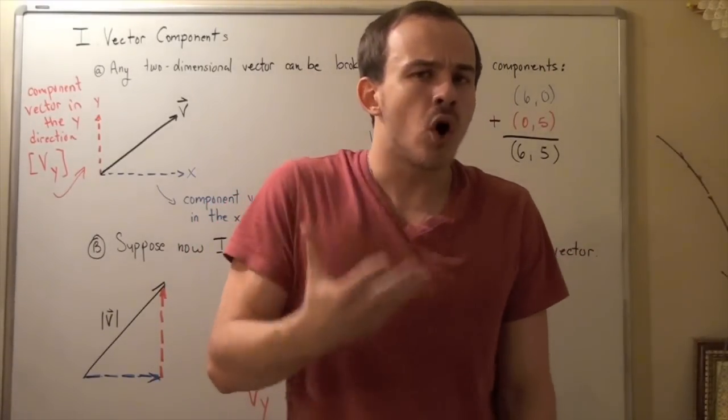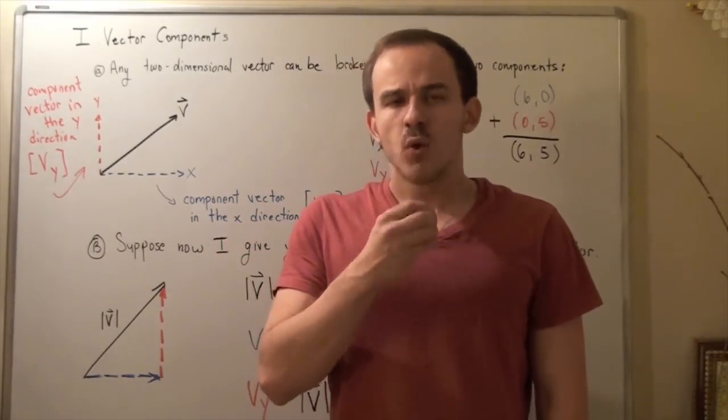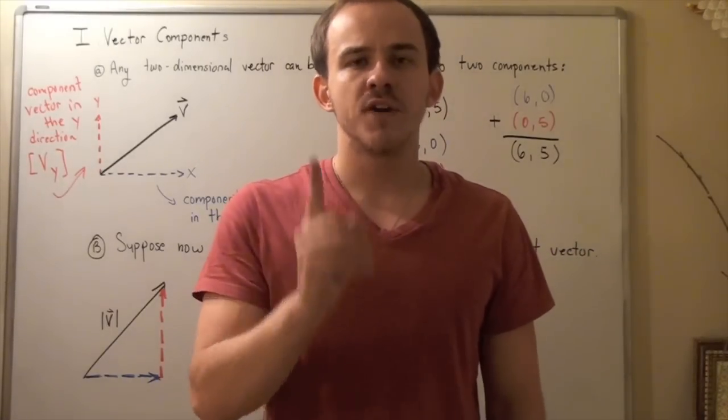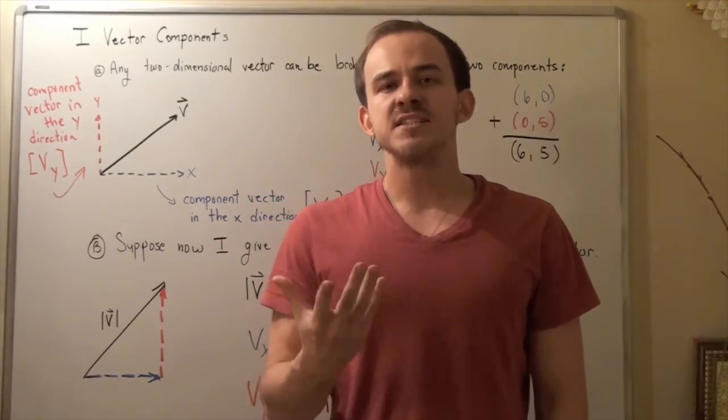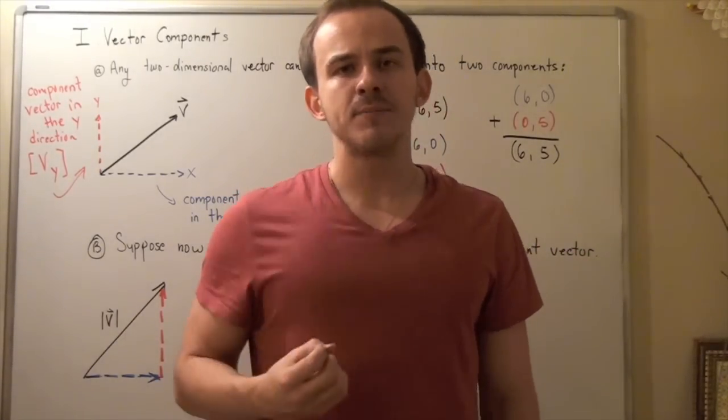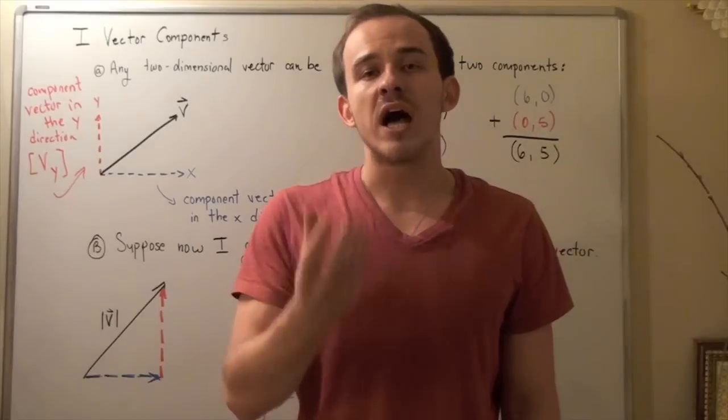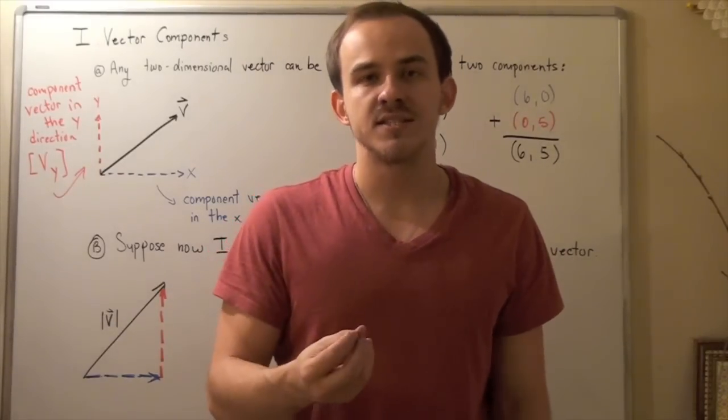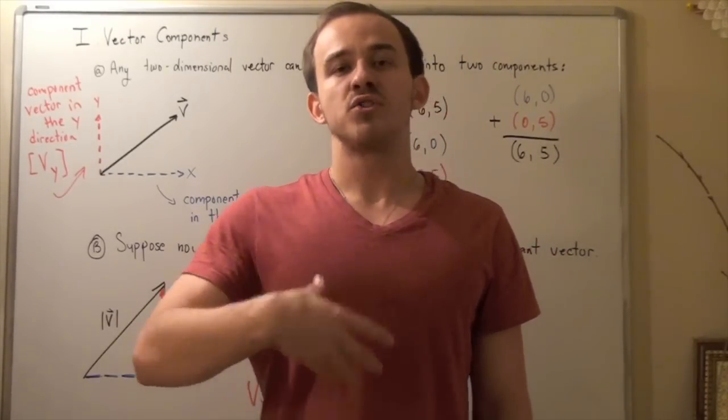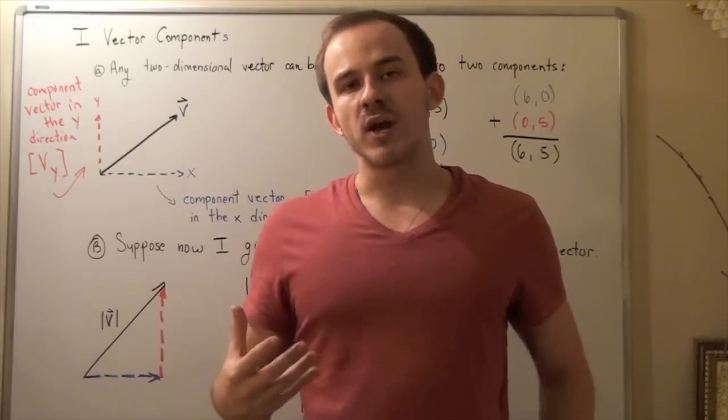But first, why are we talking about vectors so much? Well, it turns out vectors are very important in physics. That's because a lot of the different types of objects and systems that we study in physics can be described using these physical quantities called vectors that have both magnitude as well as direction.